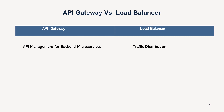On the other hand, the main functionality of a load balancer is traffic distribution. Whenever traffic comes from the client side, it distributes it to various servers or clusters of servers based on certain algorithms like round robin and similar algorithms.